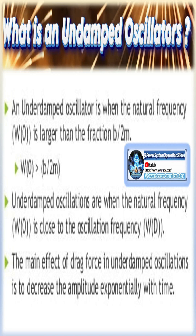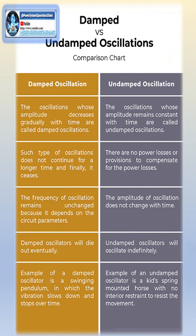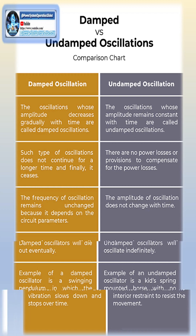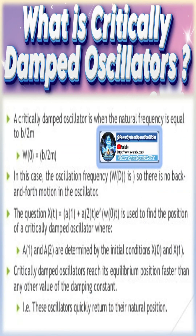In a nutshell, in damped oscillations the amplitude of the generated wave gradually decreases over time, whereas the amplitude of the generated wave does not change with time in the case of undamped oscillations.